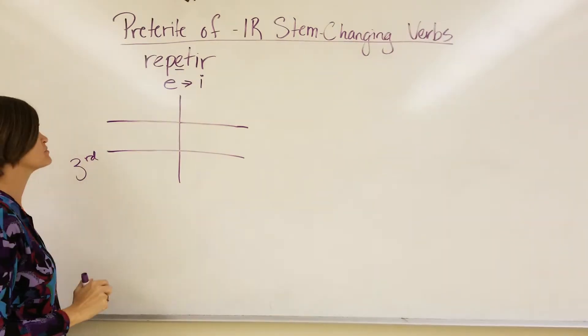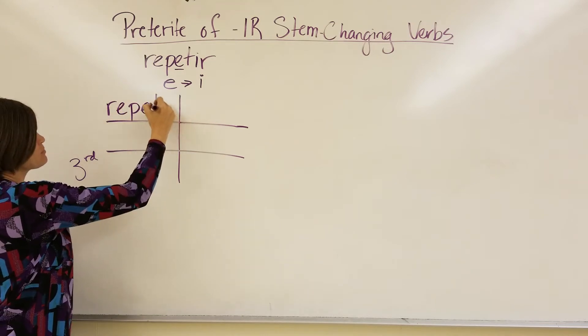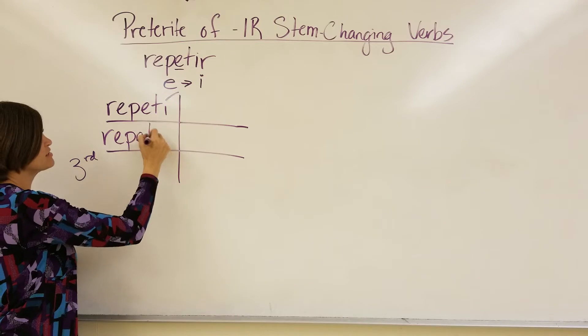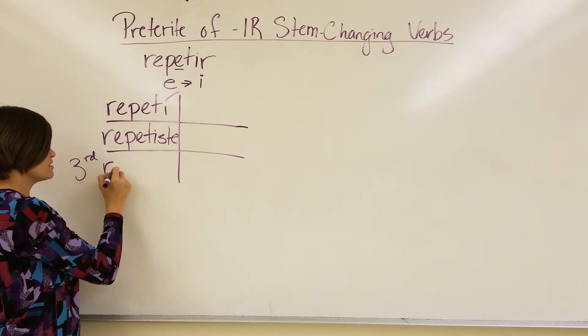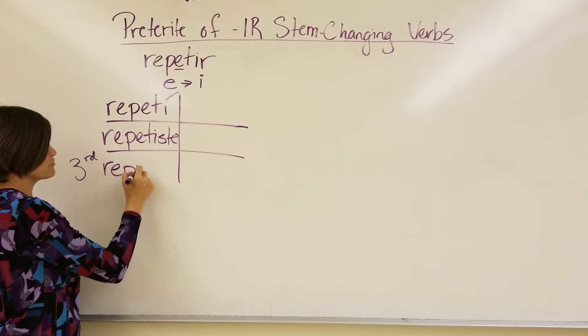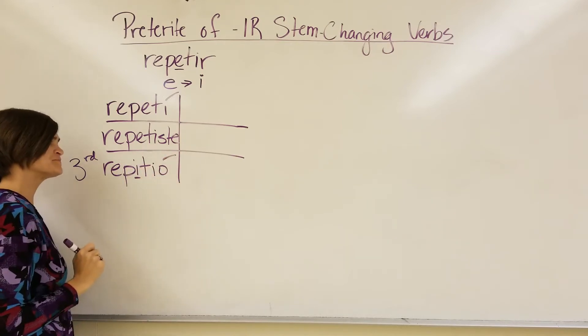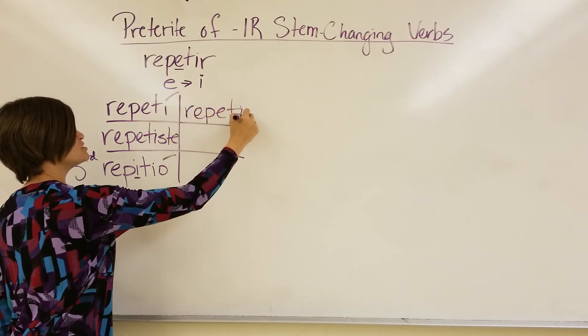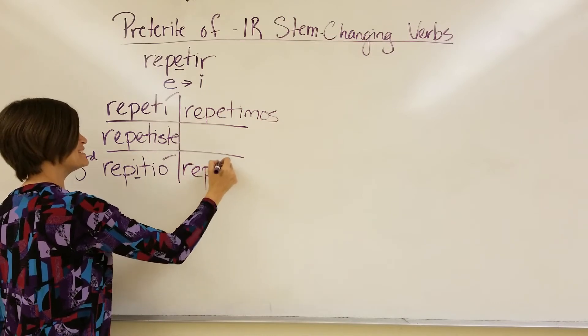So, I repeated would be repetí. No issue there. Repetiste. Still regular verb form. But in the third person, for he repeated, it'll become repitió. So, we repeated, repetimos, and they repeated, repitieron.